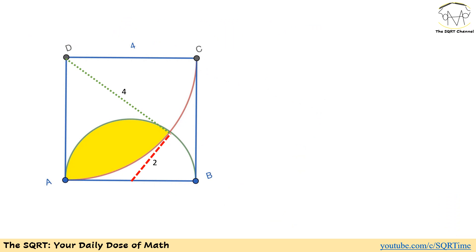To solve this problem, I'm going to start with adding two lines, both shown as dashed lines. One of them is red and the other one is green. The green line is 4 because it is the radius of the quarter circle. On the other hand, the red line is 2 because this is the radius of the semicircle.